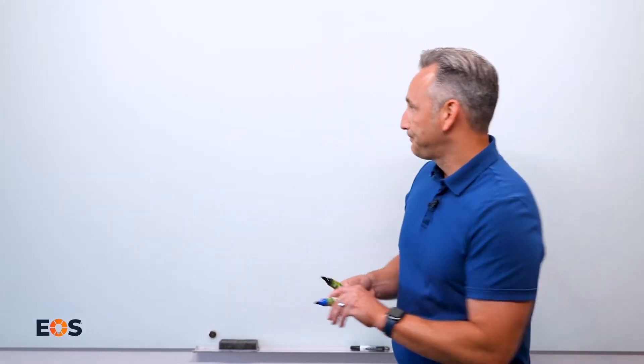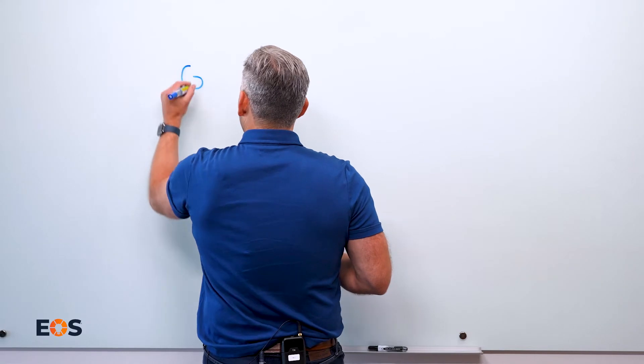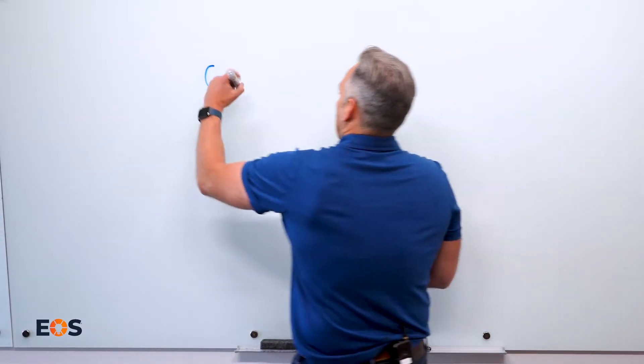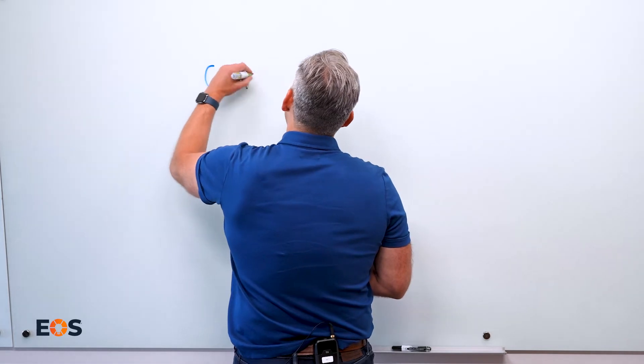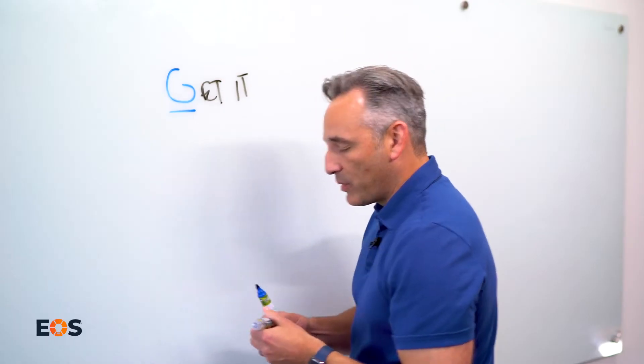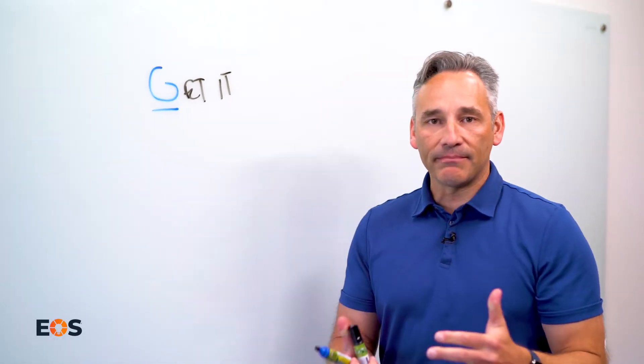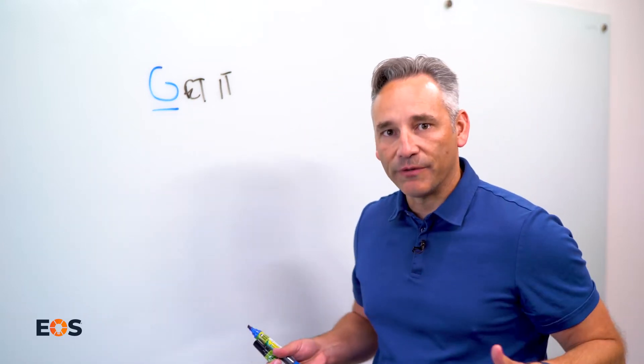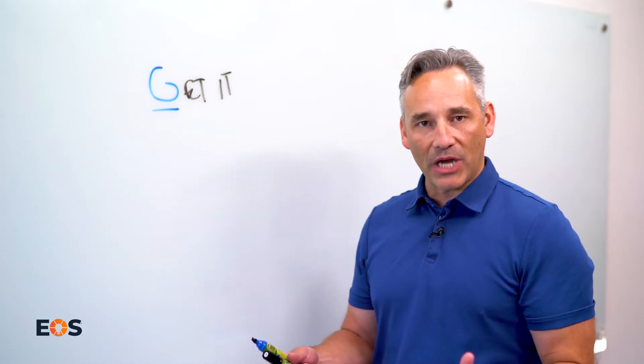Let's start with G. G stands for get it. They have to have the natural ability, the natural intuition. When you explain the job to them, all the synapses of their brain have to connect. They just have this natural feel, this intuition to do the job.